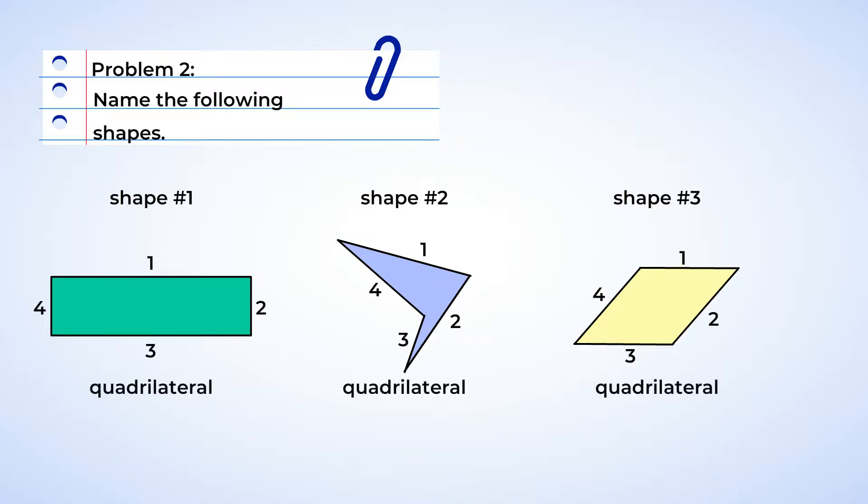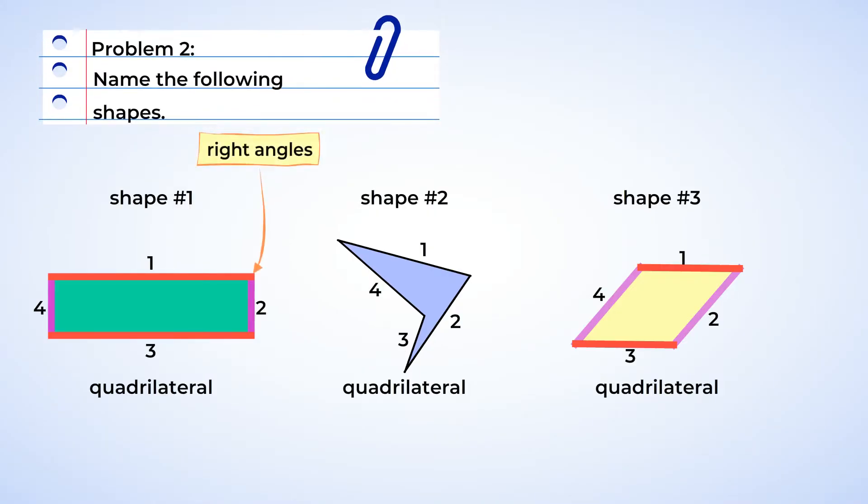Next, let's look at if any of the shapes have opposite sides that are equal or parallel. Well, shape one and three do. Now look at where the sides meet for these two shapes. So shape one makes those nice corners called right angles, and its opposite sides are equal. So is it a square or a rectangle? Well, its four sides aren't equal, and so that makes it a rectangle. Shape three does not have right angles, but its four sides are equal, so it's a rhombus.